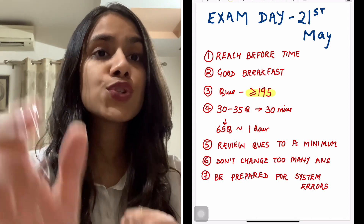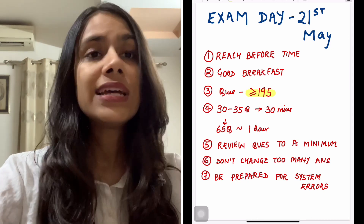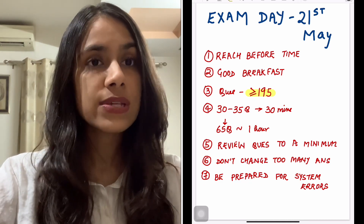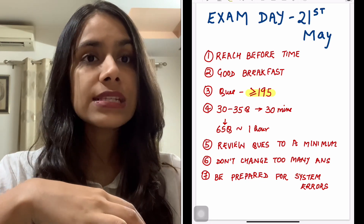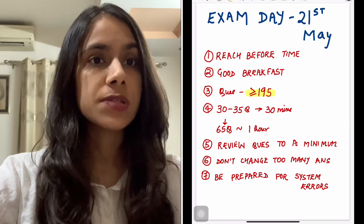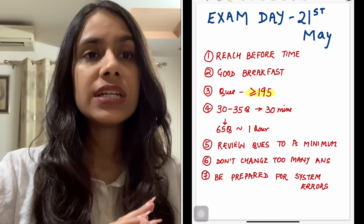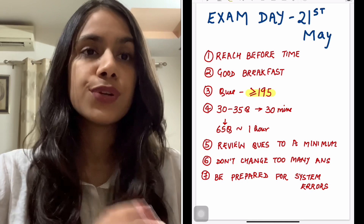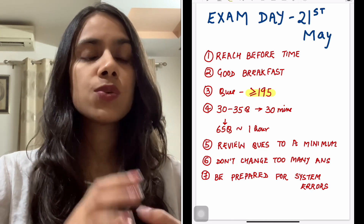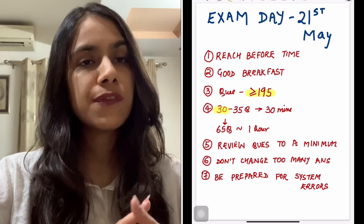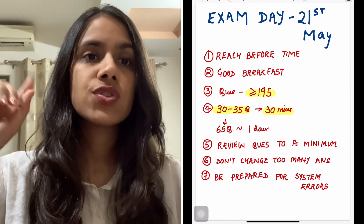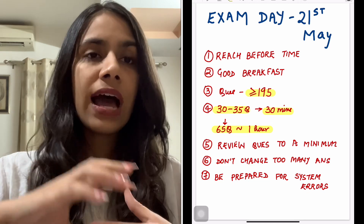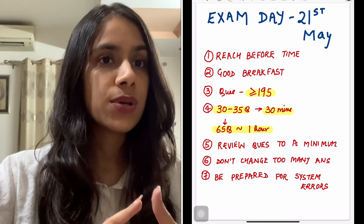In terms of number of questions, 195 questions you should try to attempt for sure. NEET PG is a very scoring paper with plus four marking for every correct question, so you should go aggressive and mark as many questions as possible. Time management is usually not that difficult for NEET PG because you have a good three and a half hours for 200 questions. You can keep a pace of 30 to 35 questions in 30 minutes or 65 questions in one hour, and you'll have enough time at the end to review a few questions.